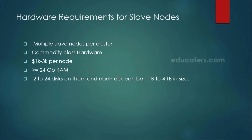The minimum requirement is 12 to 24 individual disks per machine, with each disk size from 1 terabyte to 4 terabytes. For example, if you choose 3 terabytes per individual disk and 16 disks, then 16 times 3 means each data node can be capable of storing 48 terabytes of data.